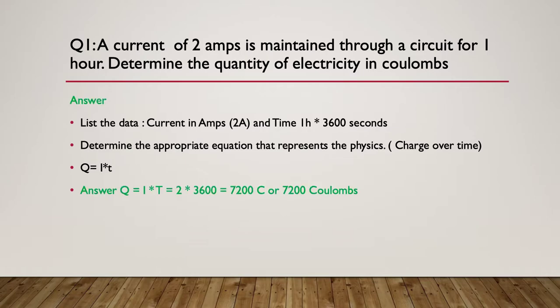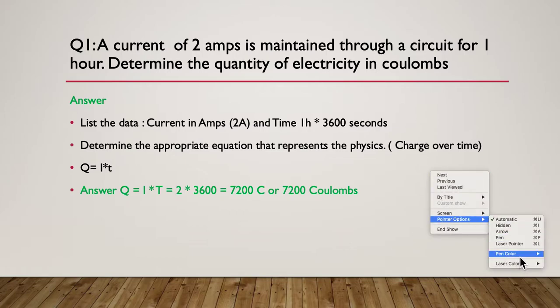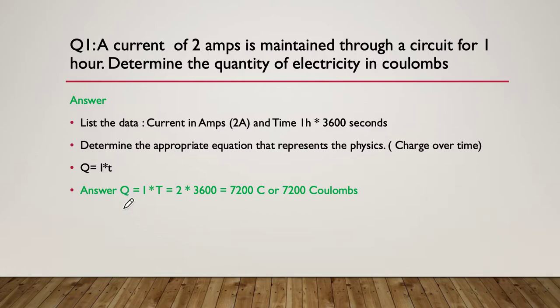So now let's answer the question. So the answer simply was, our formula if you didn't get it from the hint was Q equals I times T. So we have our two amps multiplied by 3600 giving us an answer of 7200 C or you could also use the whole word coulombs.